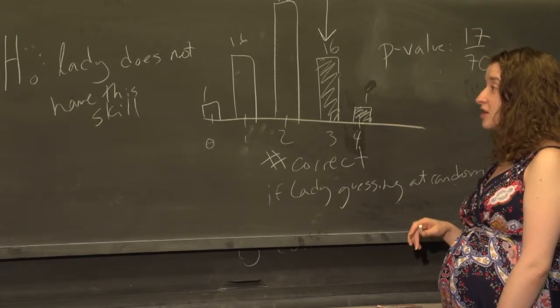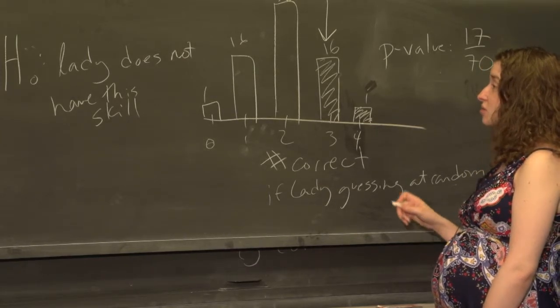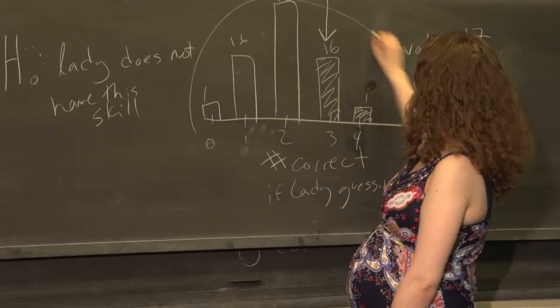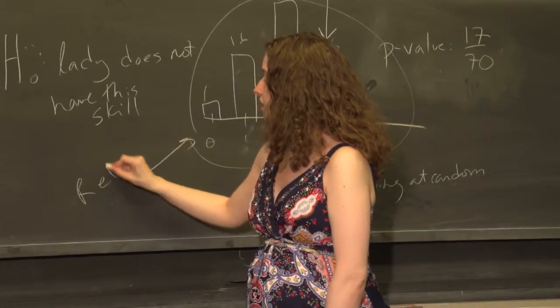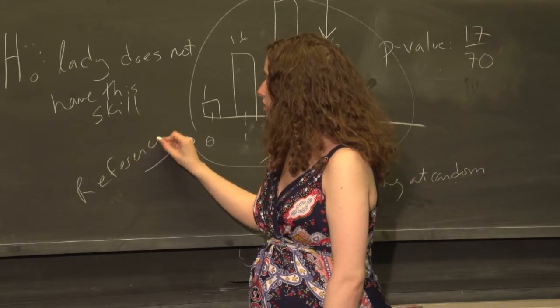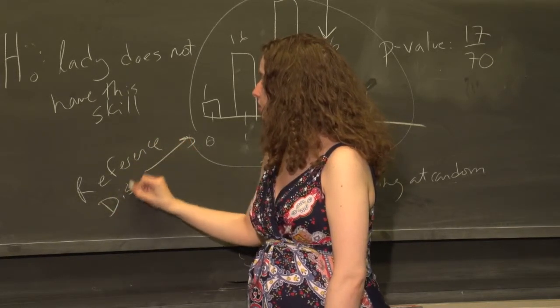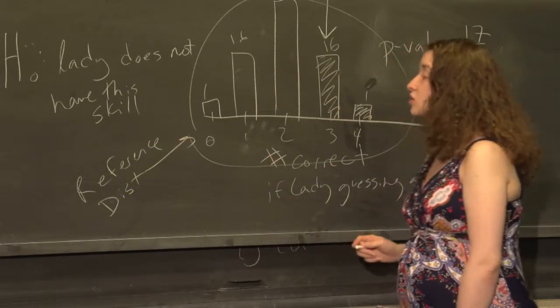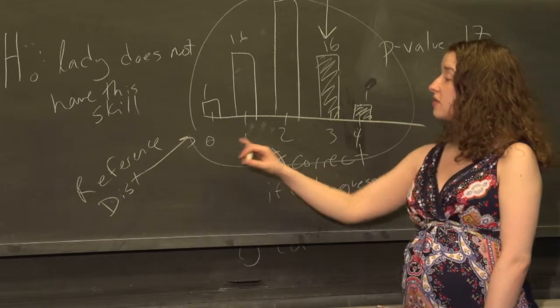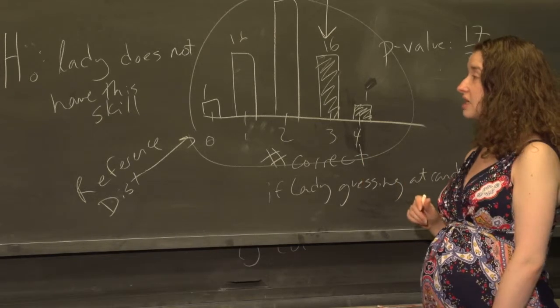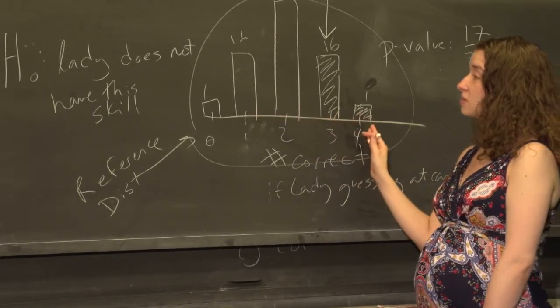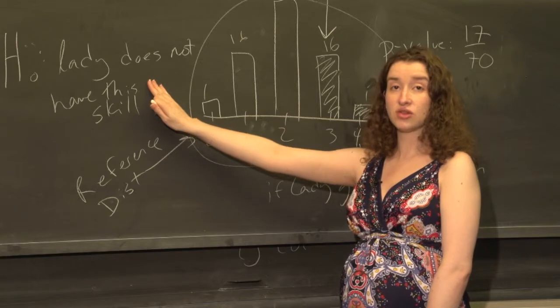Then we come up with what's called the reference distribution—that's what this is. I'm going to put this on a slide in just a moment, but I think it's helpful to label it here. The reference distribution shows you each of the possible values of the test statistic, what we'd see in the data, and how likely those different values would be if the null hypothesis were true.